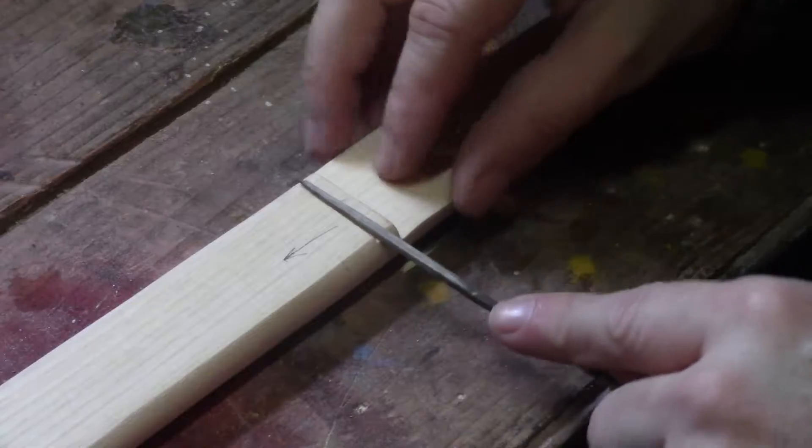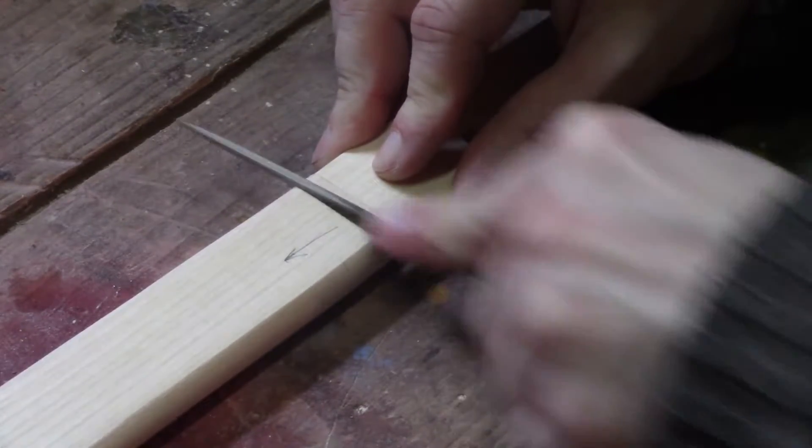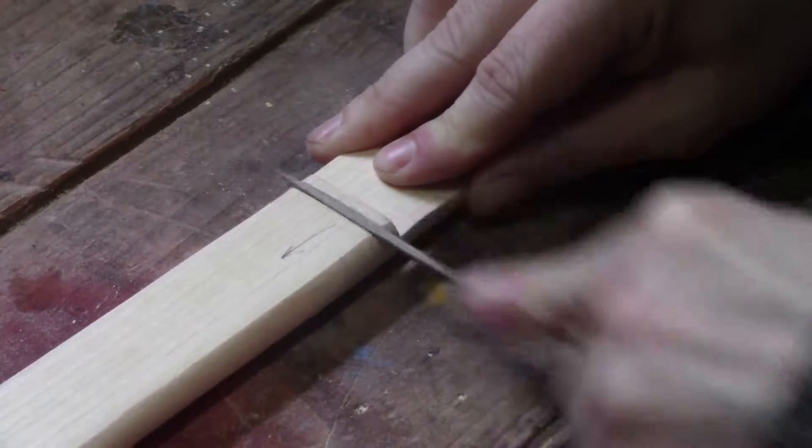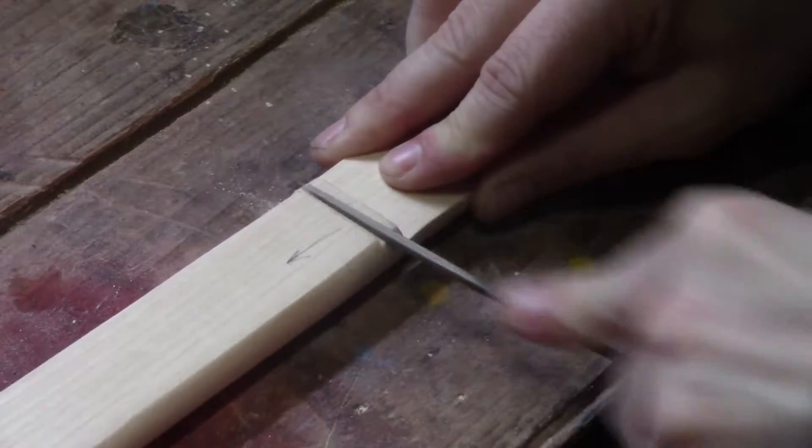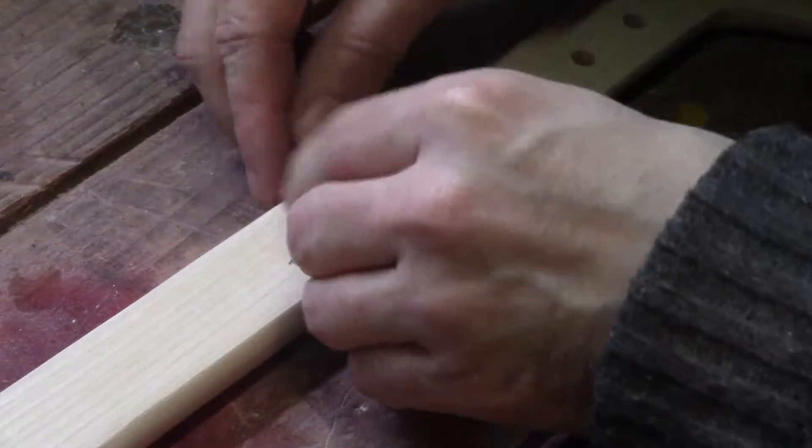And so now we'll just use a square needle file just to slightly deepen that hole again. And then we just test fit for width on our nut and we're fine.